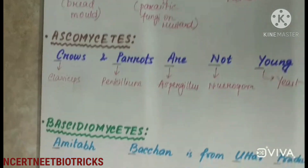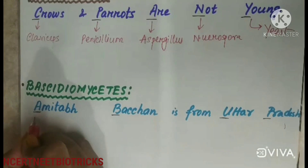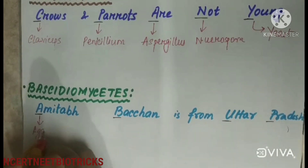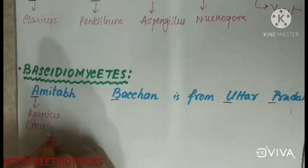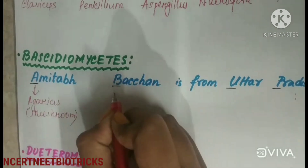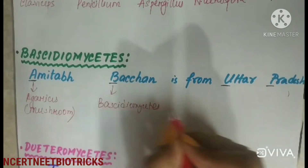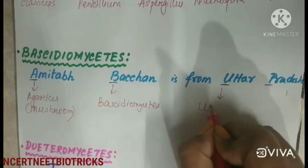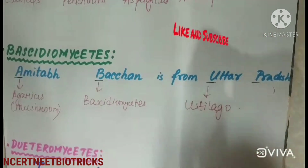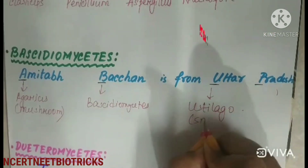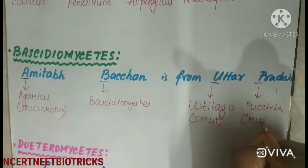Next is Basidiomycetes. The mnemonic is 'Amitabh Bachchan is from Uttar Pradesh' — A for Agaricus, B for Basidiomycetes class, U for Ustilago, and P for Puccinia. Agaricus is the common mushroom. Ustilago is also known as smut fungus, and Puccinia causes wheat rust.